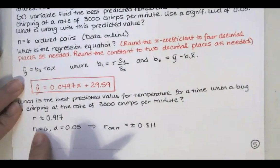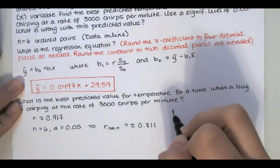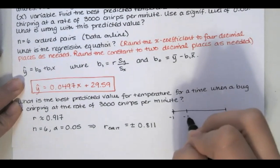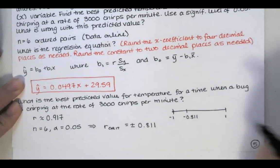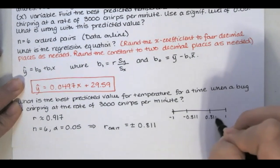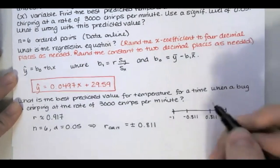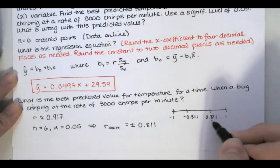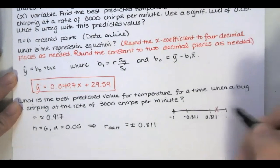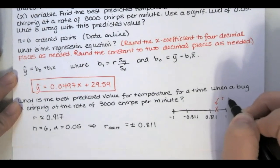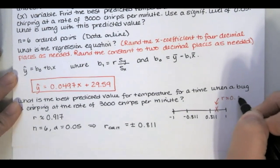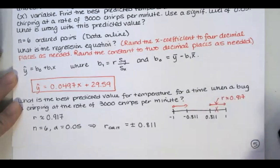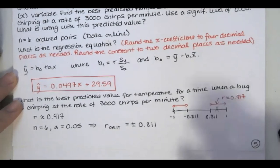So that means if I am graphing this on a number line for r values between negative 1 and 1, my critical values are at negative 0.811 and positive 0.811. This r value is closer to 1 than our critical value of 0.811 is. So our actual r value for our sample is in this region. Remember, if it's in the tails, we're going to reject that null hypothesis, which means we have evidence of a correlation.